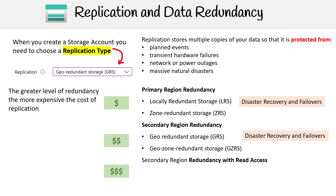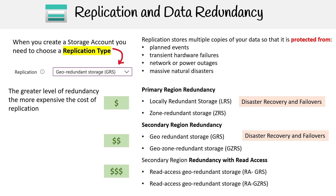The last category is secondary region redundancy with read access. For this case, we have read access geo-redundant storage (RA-GRS) and read access geo-zone redundant storage (RA-GZRS). That's generally used for read replicas. And if you can't remember all the initialisms, don't worry — I don't either.